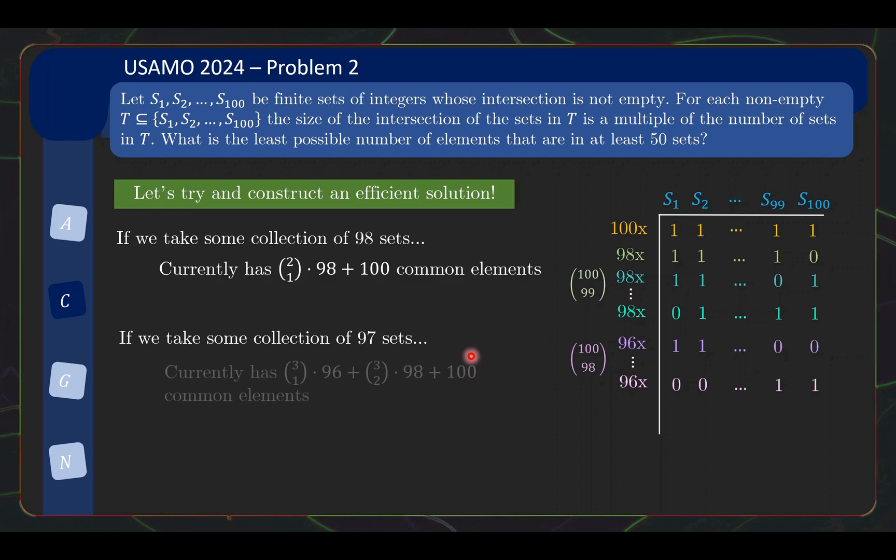Okay, I think you will see the pattern if we do one more. So for collection of 97 sets, same thing. It belongs to a collection of 98 sets in 3 choose 1 way, collection of 99 sets in 3 choose 2 way, and it belongs to the full collection of 100 sets. So this is the number of current common elements. To make this a multiple of 97, the average of 96 and 98 is already 97. So I just need to balance the 100. So I put in 94 new common elements that belong to exactly these 97 sets. Okay, so hopefully by now the pattern is clear.